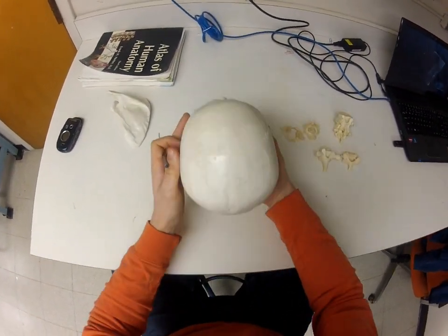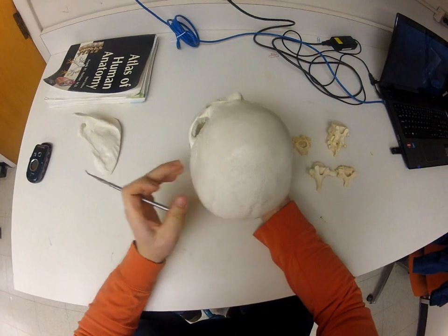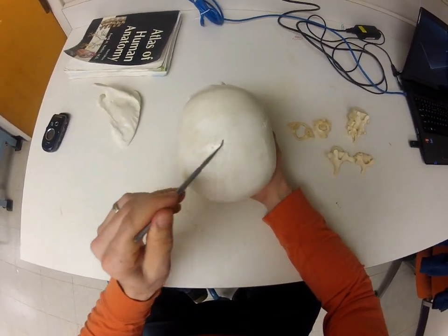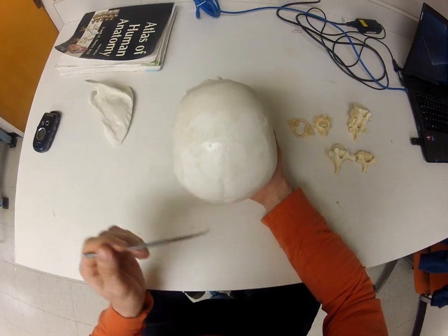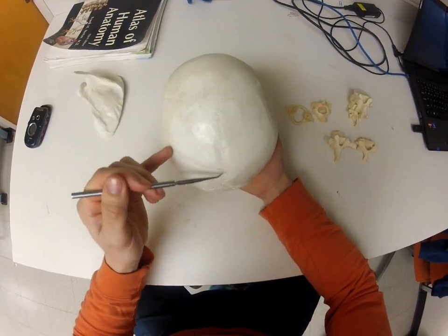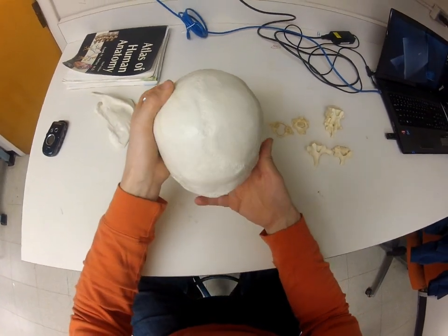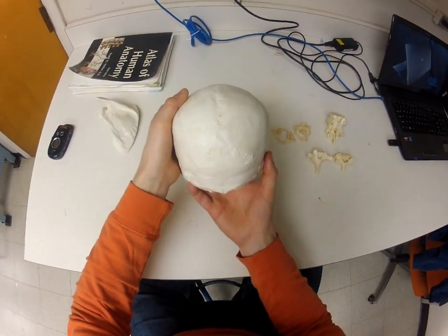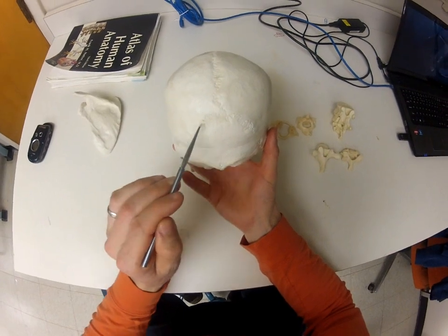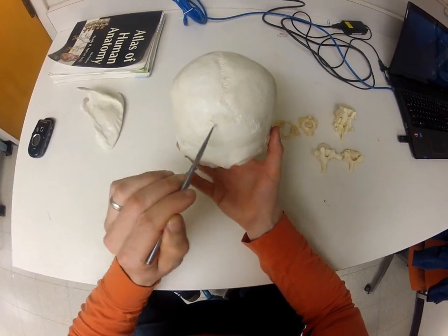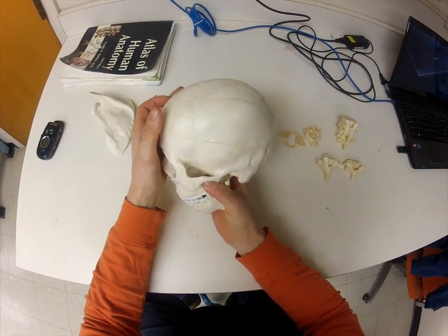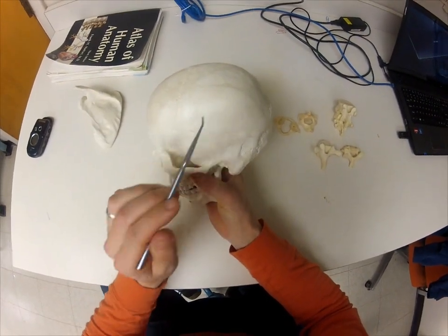Let's look at the sutures on the skull. We have two sutures in the primary plane: the coronal suture running this way and the sagittal suture running this way. Between the two parietal bones and the occipital bones we have the lambdoidal suture. On the lateral side, between the temporal bone and the parietal bone, we have the squamous suture.